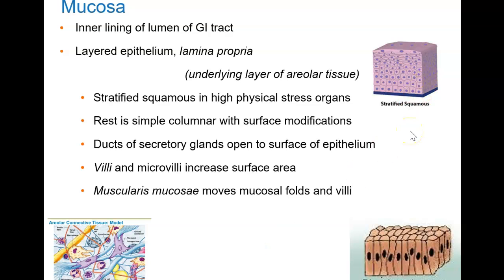The mucosa is the inner lining of the lumen of the digestive tract, also called the mucus membrane because mucus production is its main job. It's made up of epithelial tissue — in the mouth, pharynx, esophagus, and anal canal, the epithelial is non-keratinized stratified squamous. Stratified means more than one layer, and we want these high-physical-stress areas to have multiple layers for protection. In the stomach and intestines, however, this epithelial layer is simple columnar.